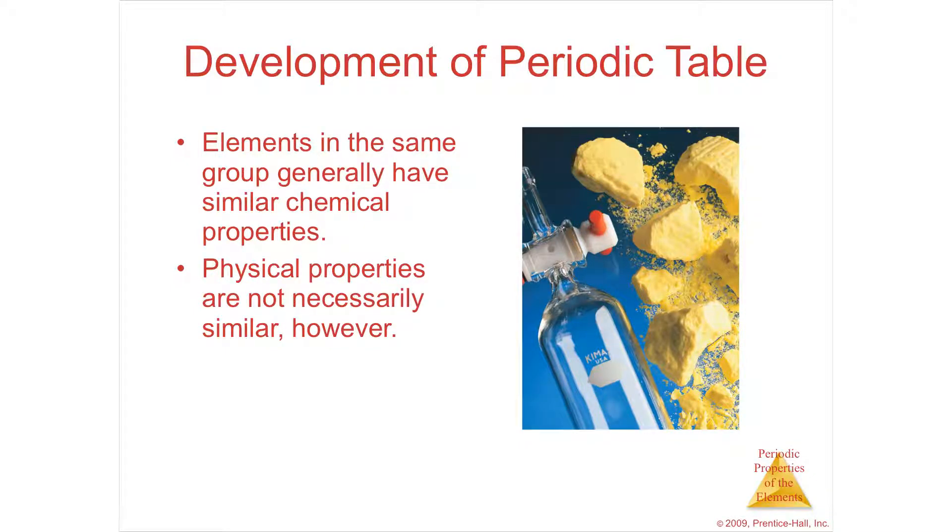Section 7.1, the development of the periodic table. The periodic table is probably the most significant tool that chemists use for organizing and recalling chemical facts. It's got everything there.